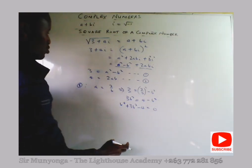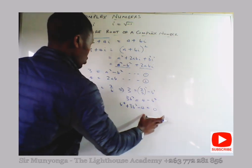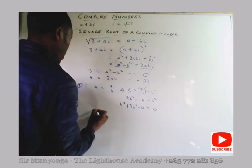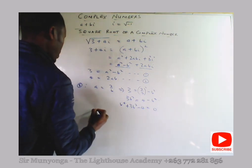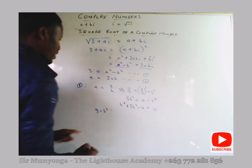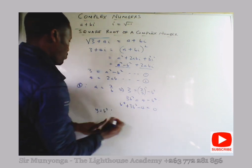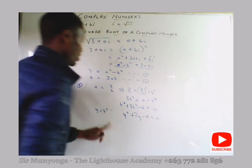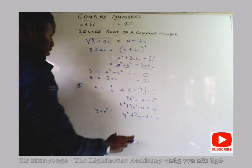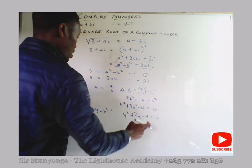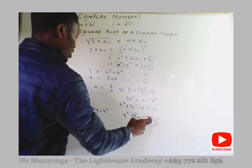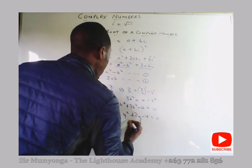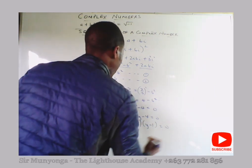We convert this to a quadratic equation by substituting y equals b squared, giving y squared plus 3y minus 4 equals 0, which factors as (y plus 4)(y minus 1) equals 0.